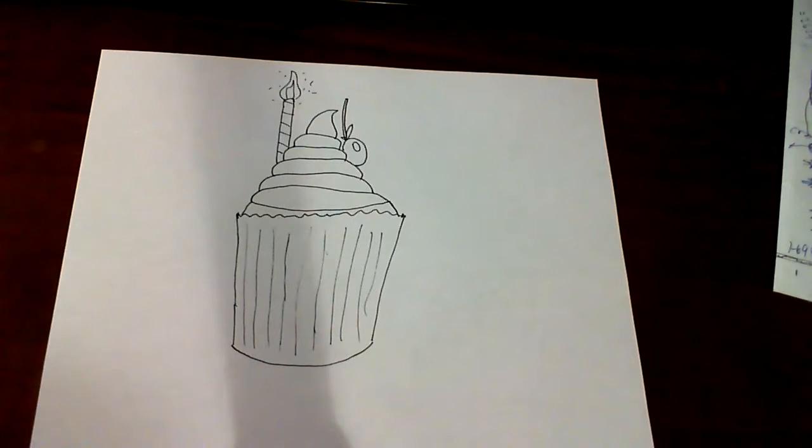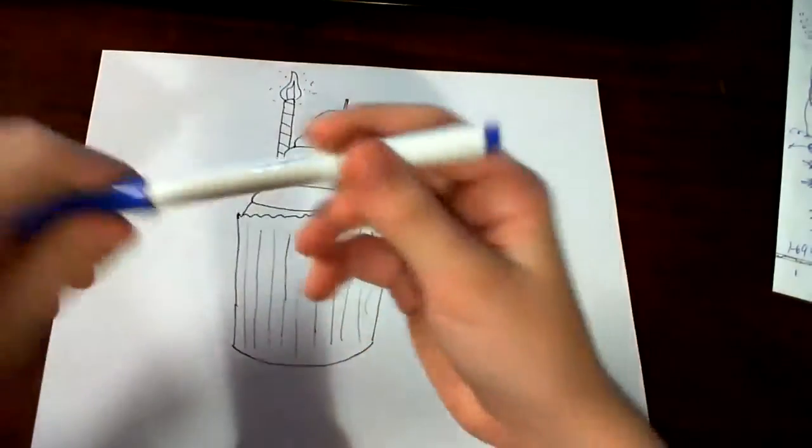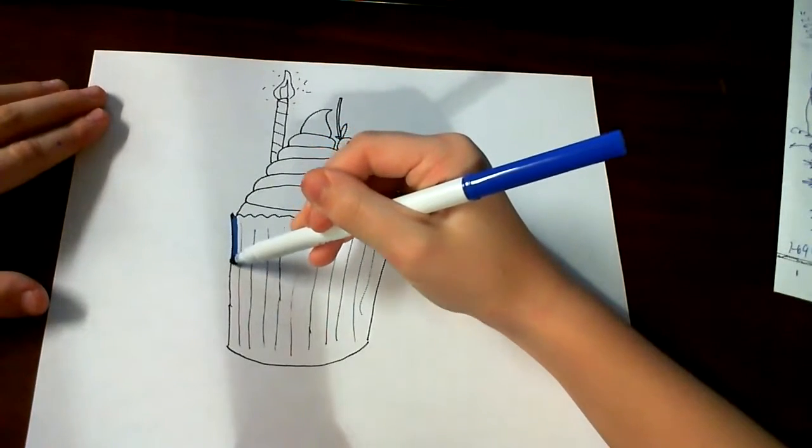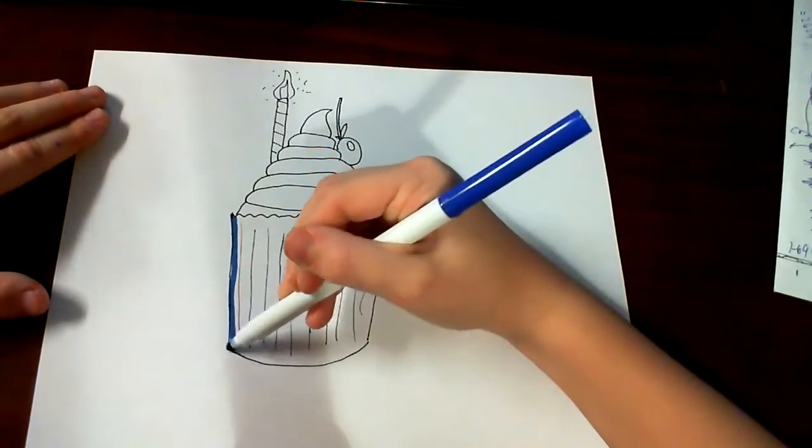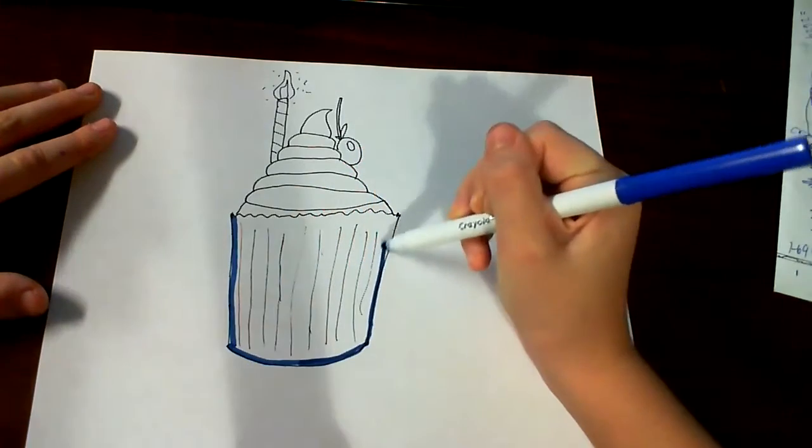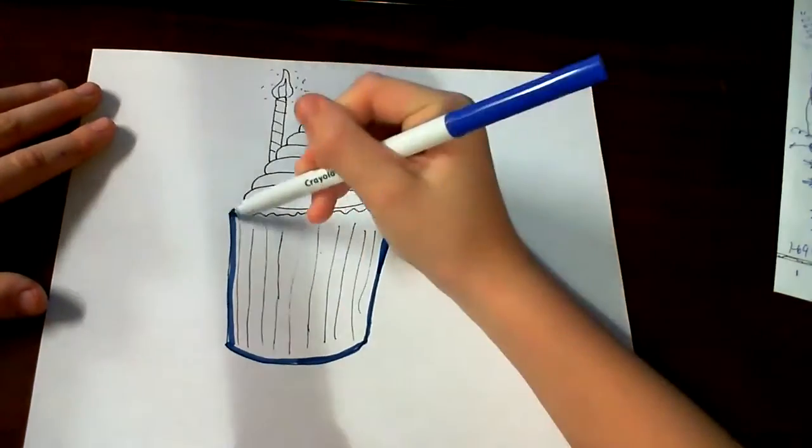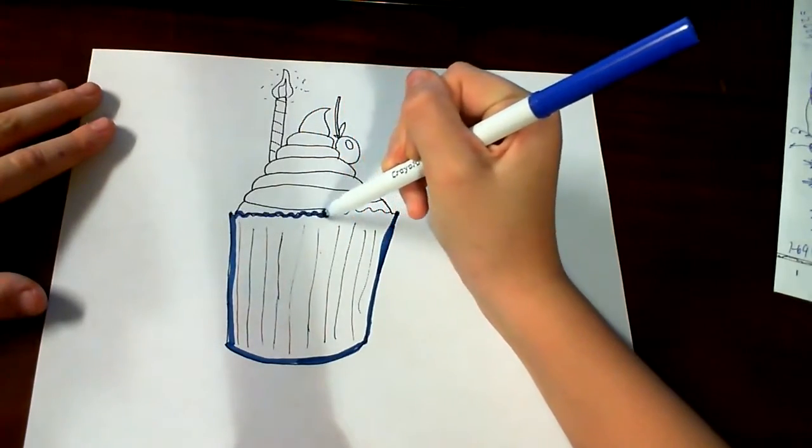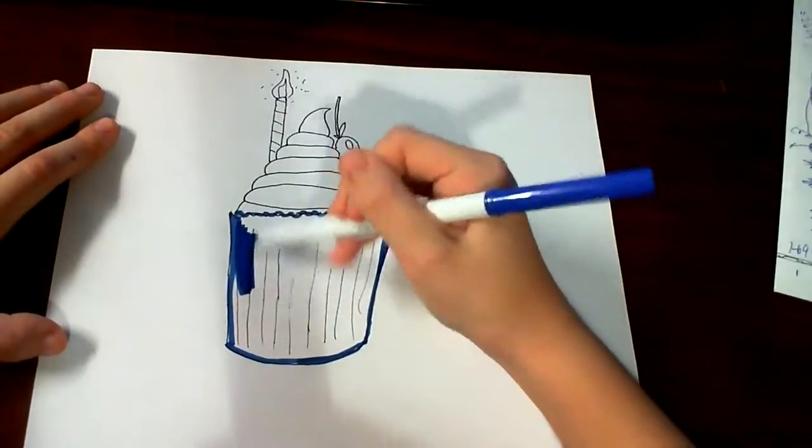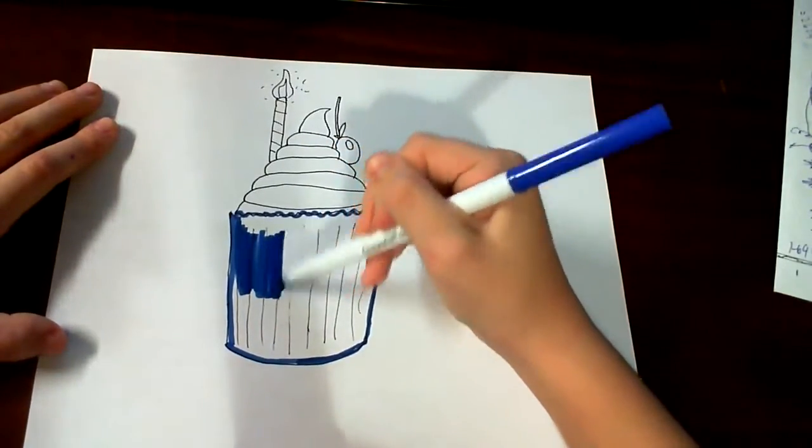So now we can do the coloring. And the coloring is I'm going to be using markers just because, why not? So I'm just going to color a blue cupcake paper thing, but you can do whatever color you want. This is just one example. You can do purple or pink or green if that's your thing, but of all colors I'm just going to do blue.